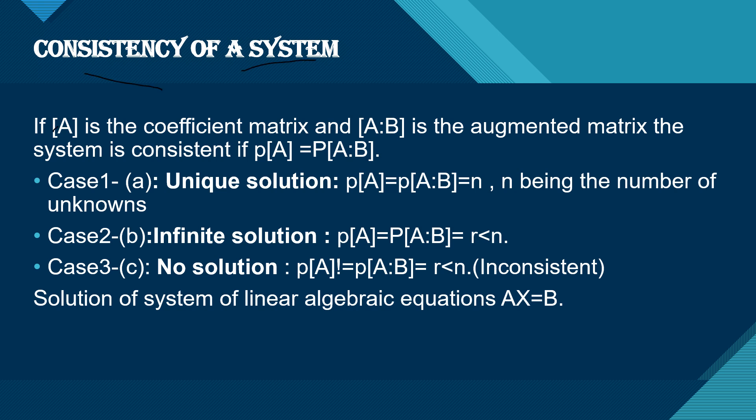If A is the coefficient matrix and [A|B] is the augmented matrix, the system is consistent if ρ(A) = ρ[A|B].